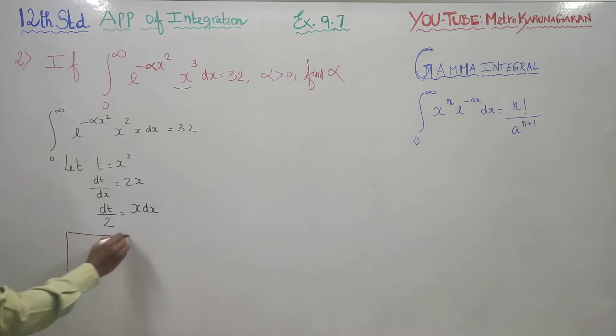Again, our limits for x are 0 and infinity. When you substitute for 0, 0 squared becomes 0. Infinity squared becomes infinity.